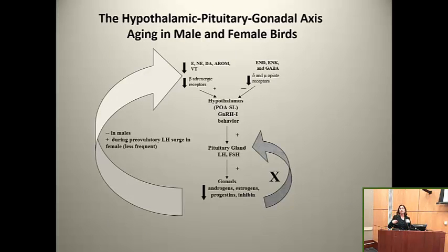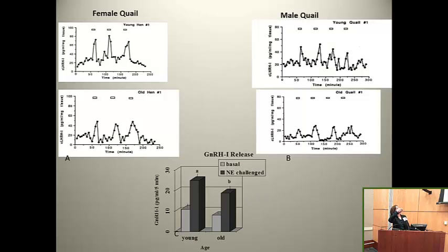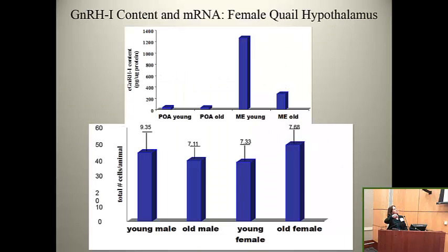We've taken this to mean that it's the hypothalamus that shuts down primarily before the ovary is really non-functional. In the bird world, it appears to be more driven by the hypothalamic system becoming less responsive than the ovary losing its ability to produce follicles. In males, a similar thing happens. Comparing hypothalamic slices in vitro from young and old females, the GnRH release, even though it remains pulsatile, is damped — same in males. When challenged with norepinephrine, there is less of a response. But this is not due to a lack of GnRH message; it is due to a lack of producing GnRH.